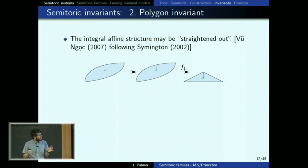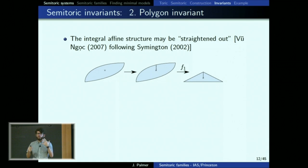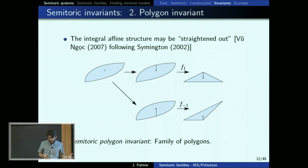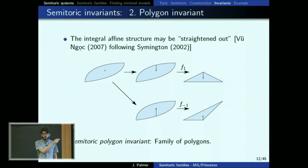This gives the semi-toric polygon. A subtle but important point is that it makes sense to cut vertically, since the Hamiltonian S^1 action gives a preferred direction. But instead of cutting up, you could cut down and get a different polygon. So what you really get as the polygon invariant is a family of polygons — in fact an infinite family, because when you straighten things out there's an extra integer degree of freedom. The important degree of freedom is whether you cut up or down, and packaging all these polygons together is the polygon invariant.